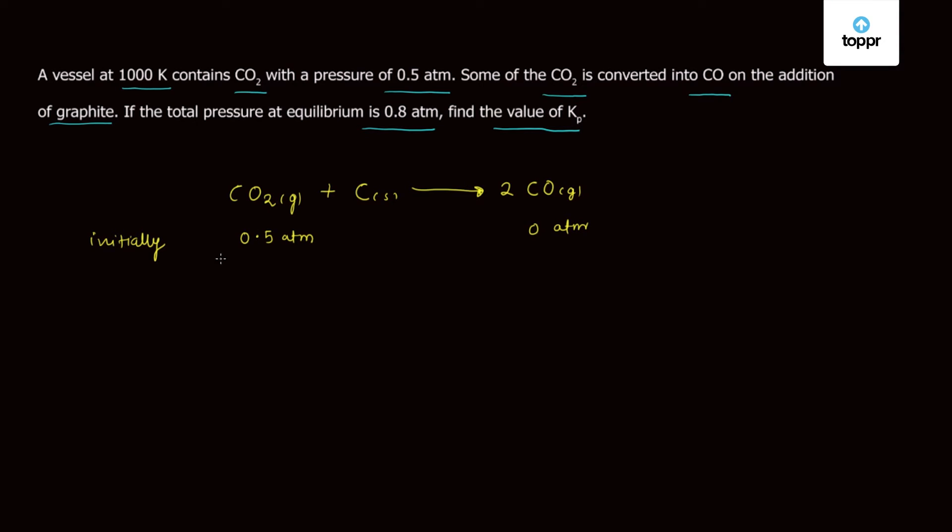So finally let x part of it be dissociated so 0.5 minus x and this part will appear here as 2 times x.